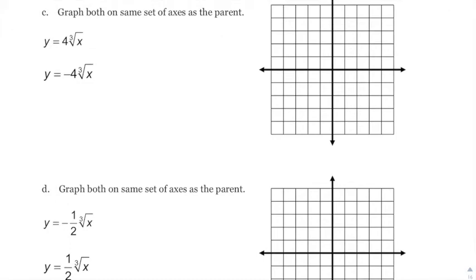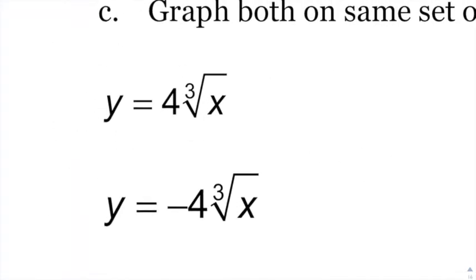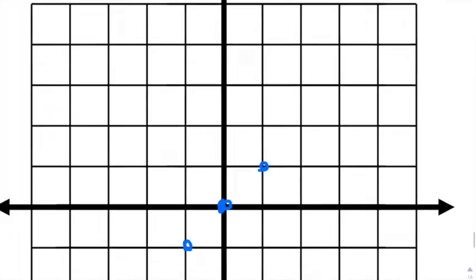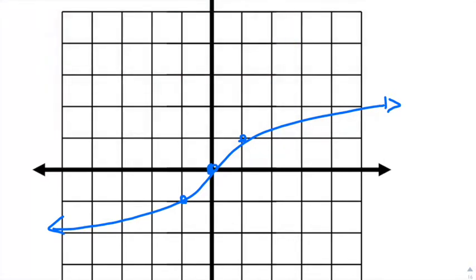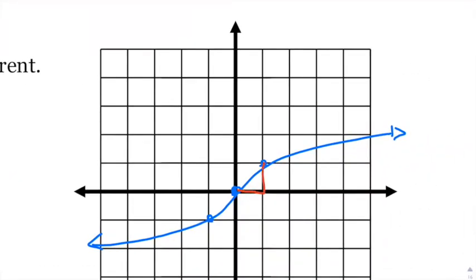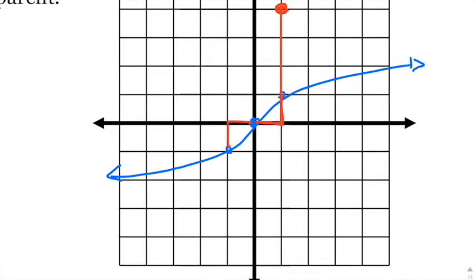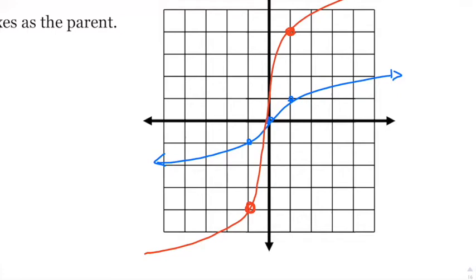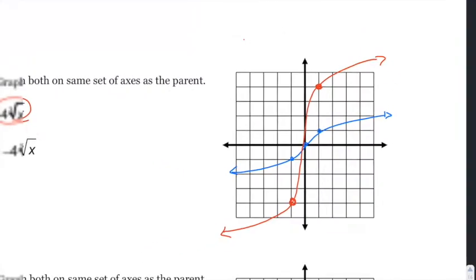On this next page we're working on vertical compressions and stretches. This one has four out in front, which is a vertical stretch — everything will be four times as tall. The parent function looks like a typical cube root curve. With the vertical stretch, instead of going over one and up one, you go over one and up four. On the other side, instead of the cube root of negative one being negative one, you multiply by four, so you're down four.